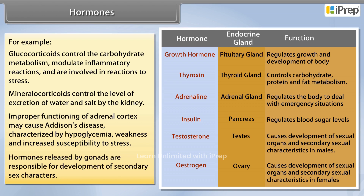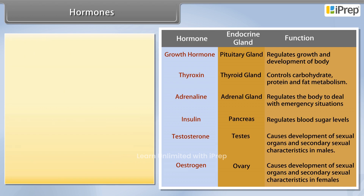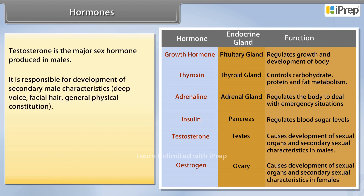Hormones released by gonads are responsible for the development of secondary sex characters. Testosterone is the major sex hormone produced in males. It is responsible for the development of secondary male characteristics such as deep voice, facial hair, and general physical constitution.